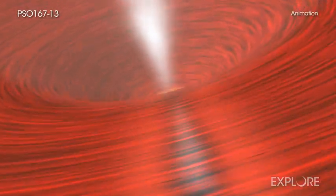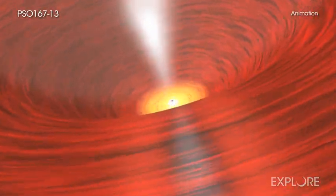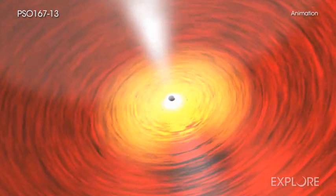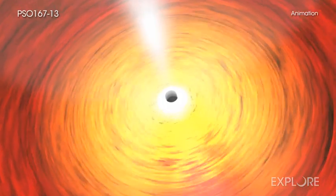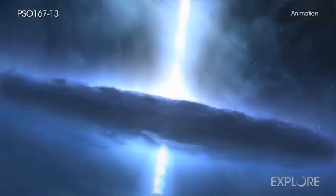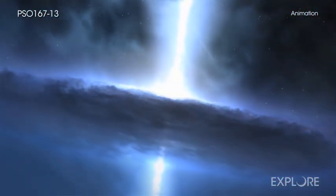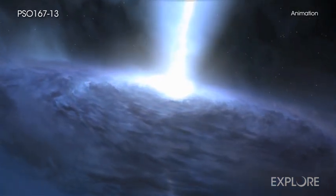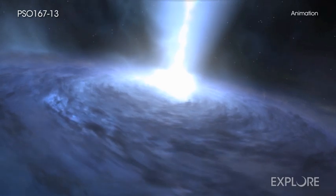Supermassive black holes, which are millions to billions of times more massive than our Sun, typically grow by pulling in material from a disk of surrounding matter. Rapid growth generates large amounts of radiation in a very small region around the black hole. Scientists call this extremely bright, compact source a quasar.